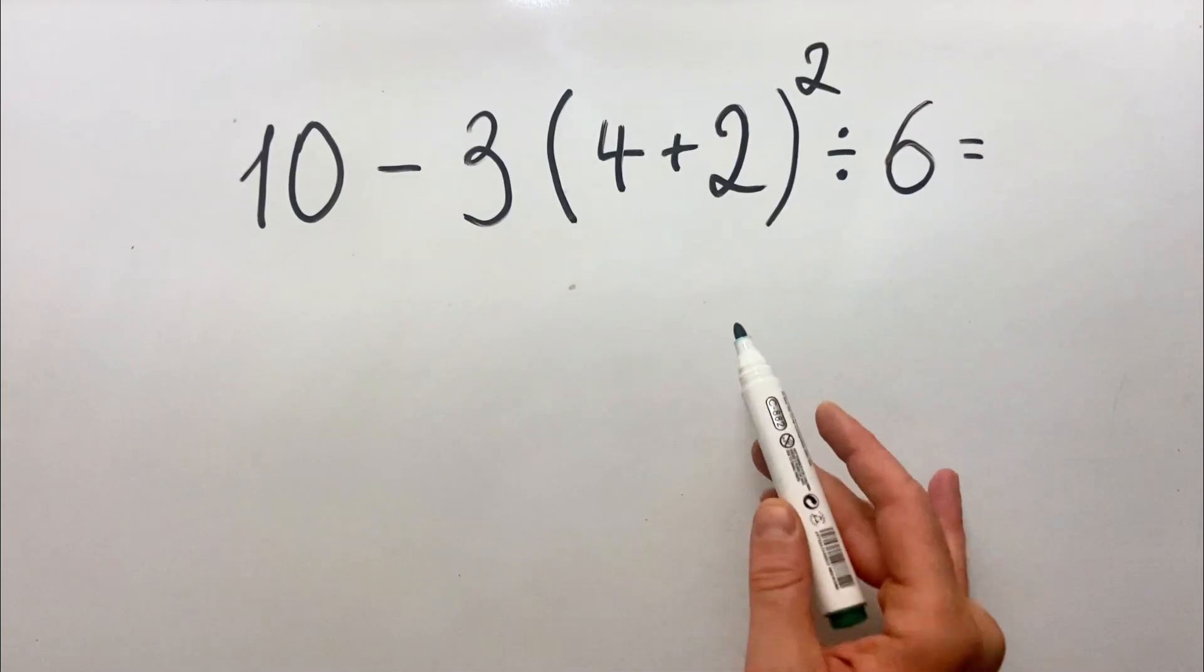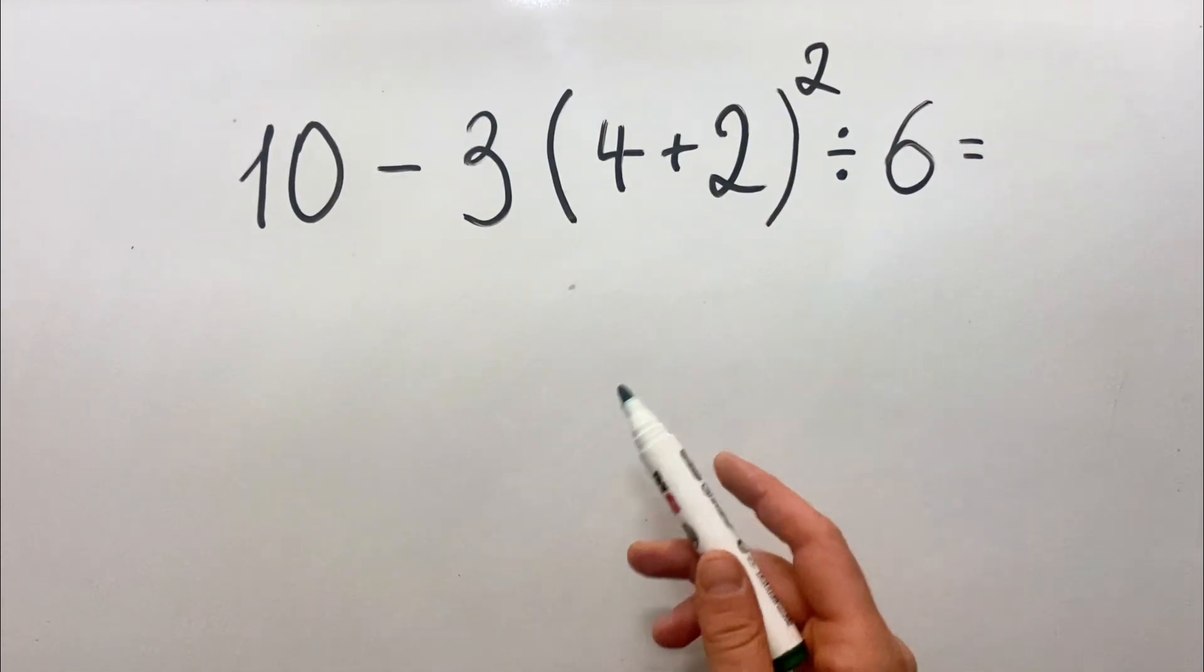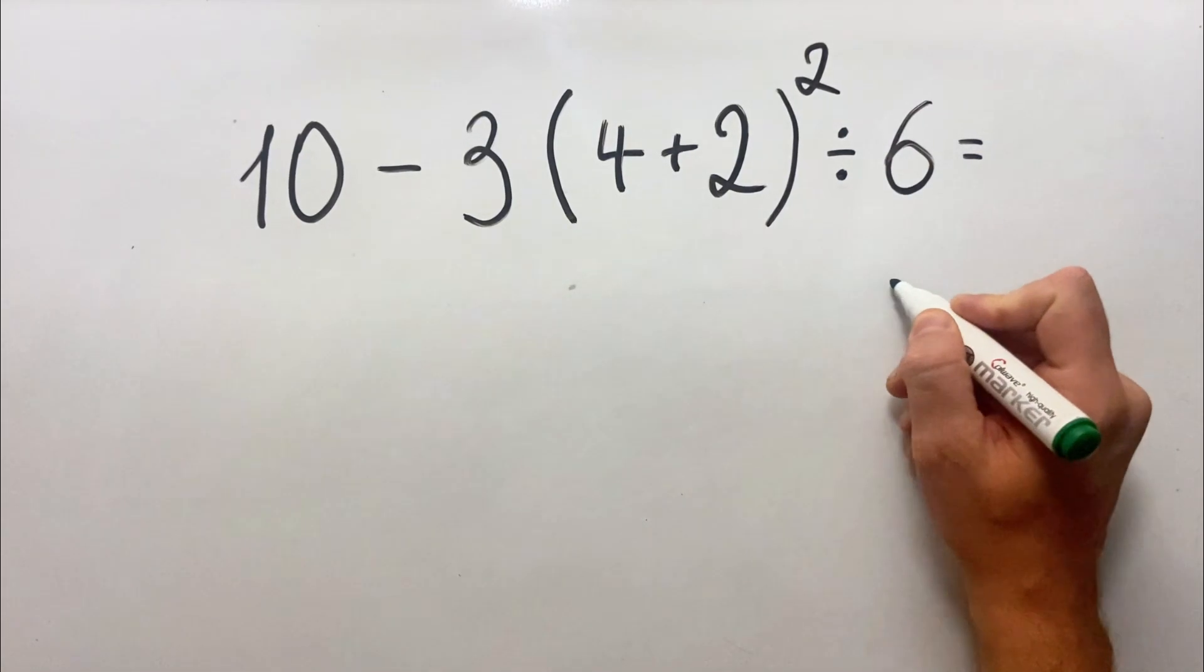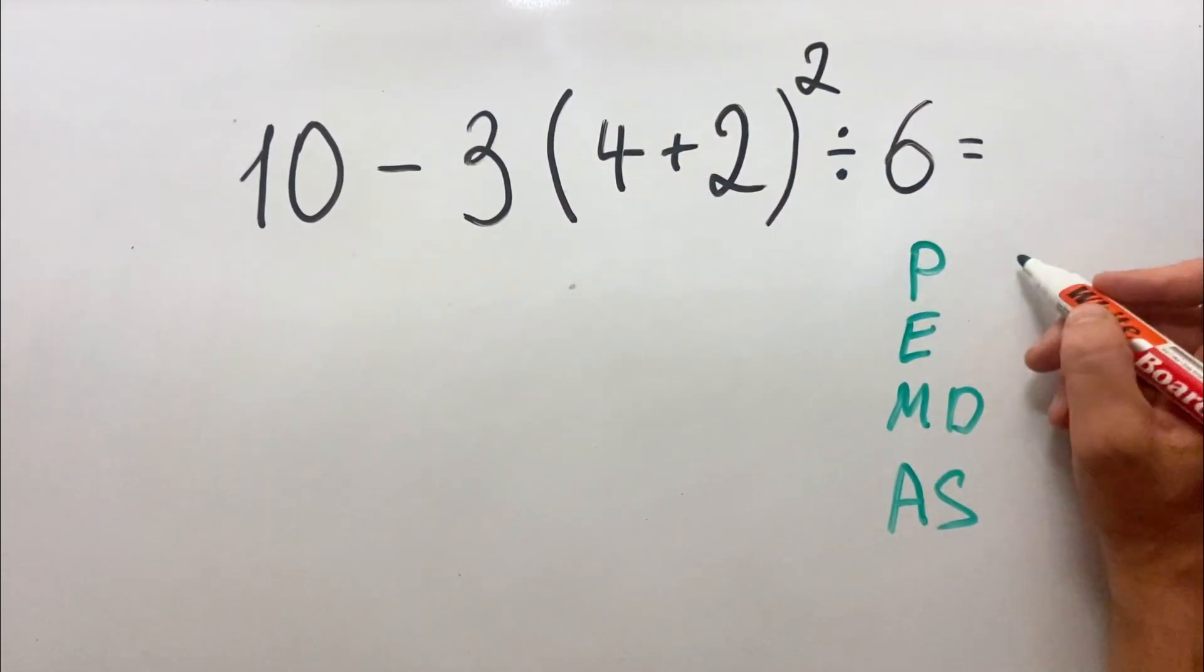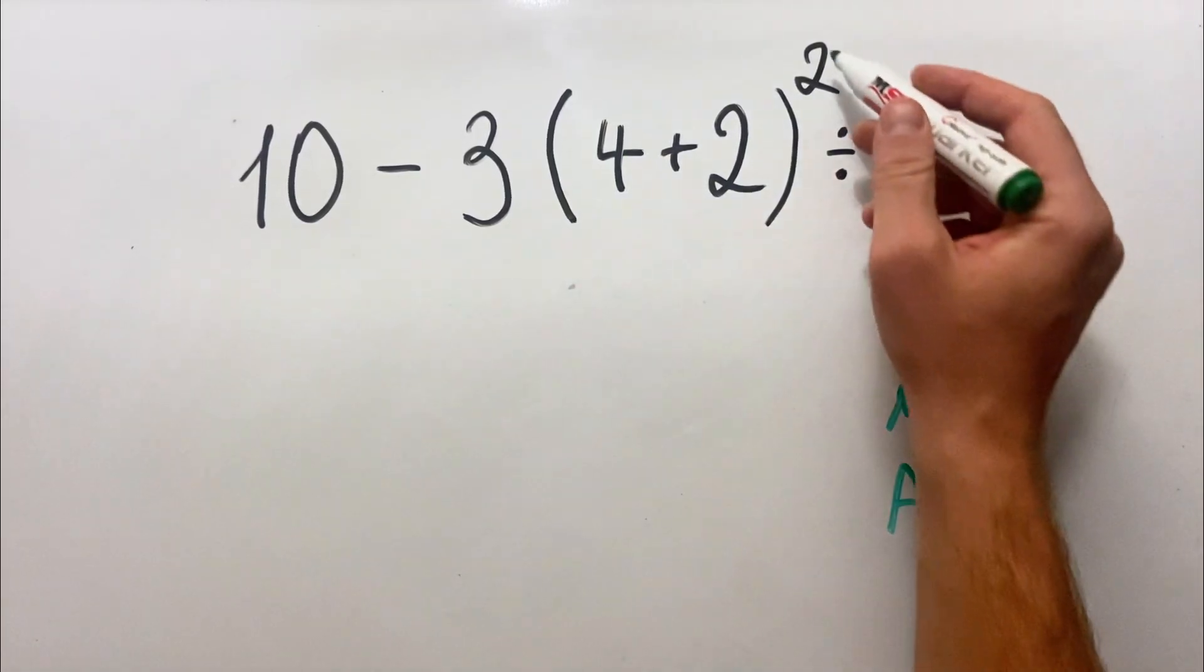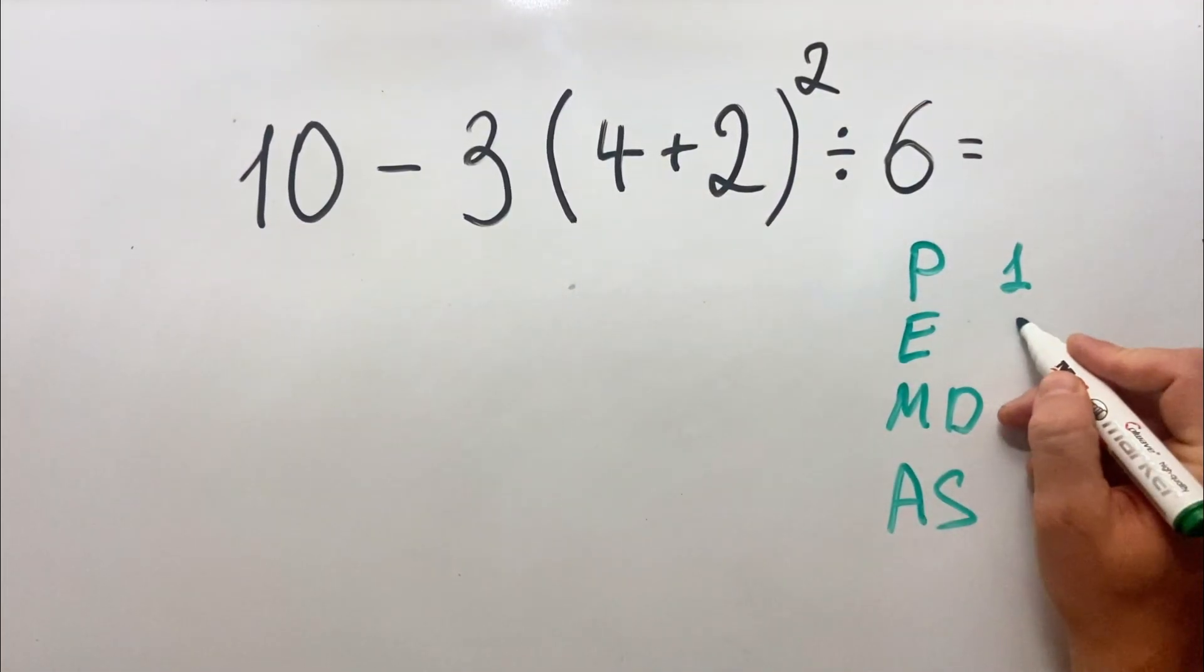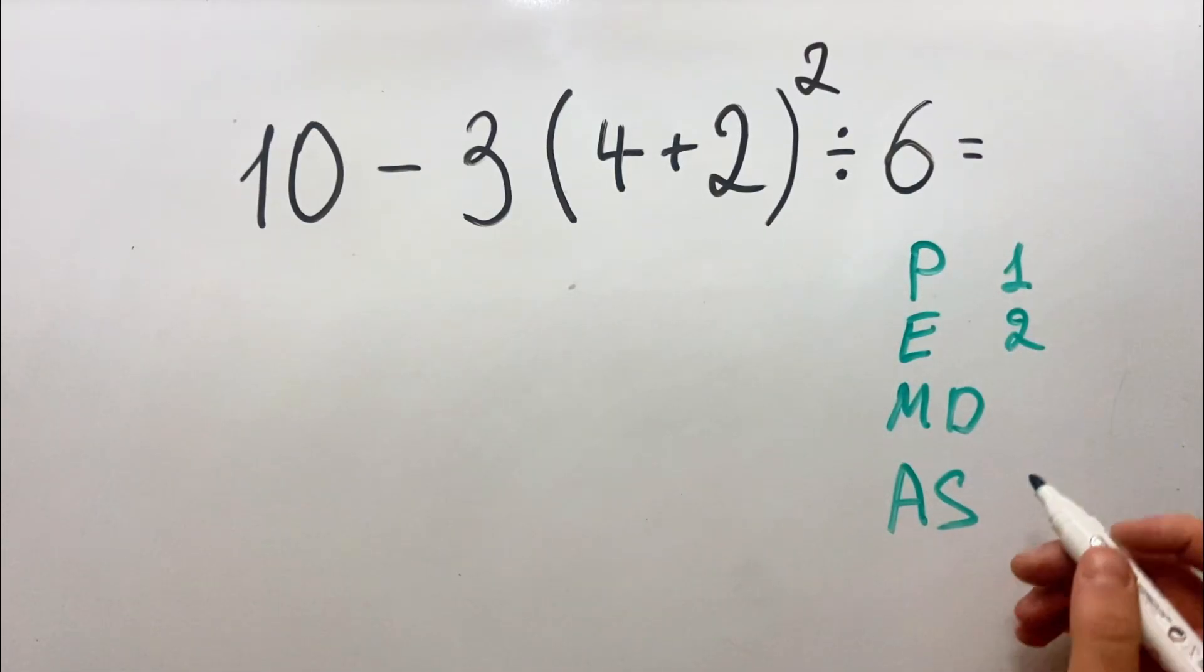This is a perfect example where we can use the order of operations, which is PEMDAS, where P stands for parenthesis - we must do it in the first place. E stands for exponents, so we must do it in the second place after doing the parenthesis.